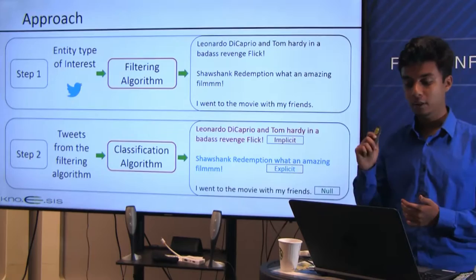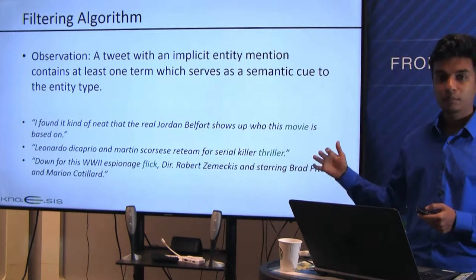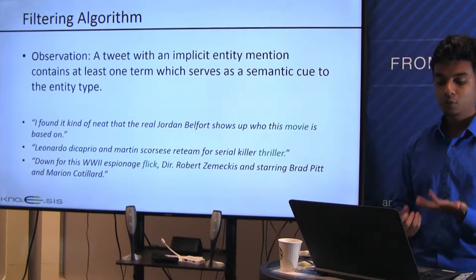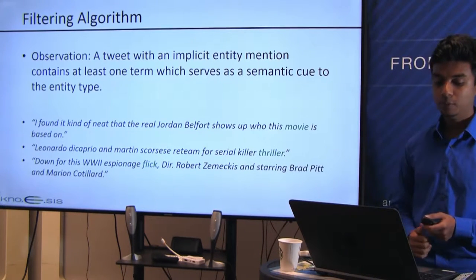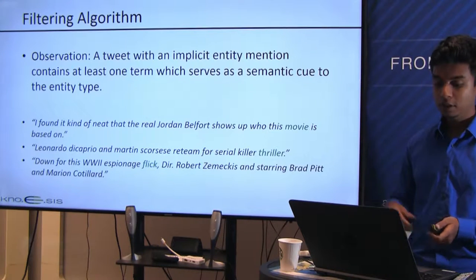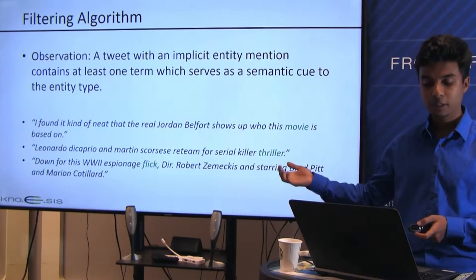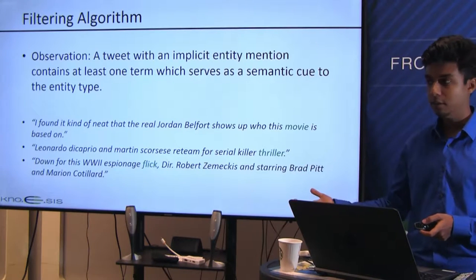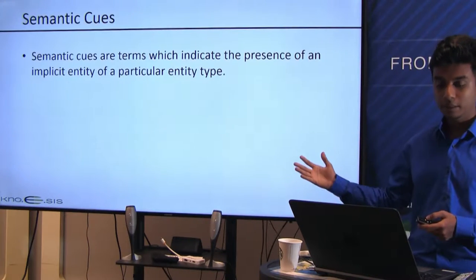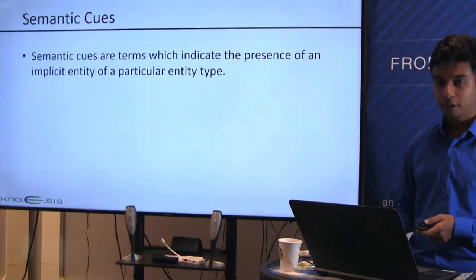The intuition behind the filtering algorithm is that every tweet with an implicit entity mention will contain at least one term that acts as a semantic cue of the entity type. For example, the first tweet contains the term 'movie,' which indicates a potential implicit entity of type movie. The second tweet has 'thriller' and the third has 'flick.' We call these terms semantic cues — terms which indicate the presence of an implicit entity of a particular entity type.